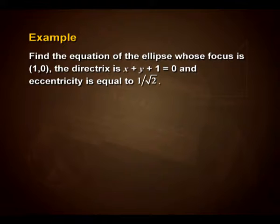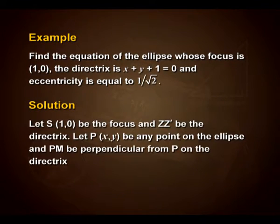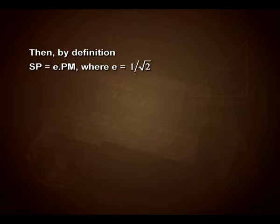Let us solve an example. Find the equation of the ellipse whose focus is S(1, 0), the directrix is x + y + 1 = 0, and eccentricity E = 1/√2. Let S(1, 0) be the focus and ZZ' be the directrix. Let P(x, y) be any point on the ellipse and PM be perpendicular from P on the directrix. Then by definition, SP = E·PM where E = 1/√2.